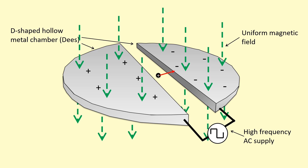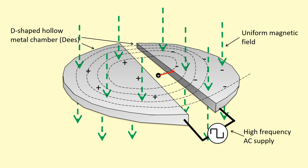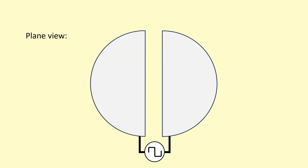Because the magnetic field is going to cause circular motion, it's actually going to spiral. Every time it goes through the gap it speeds up a bit, and this eventually comes out at near the speed of light. Let's take a more detailed view of what's going on. This diagram shows a plan view — basically from above — an overhead view, and there's going to be a magnetic field going into the page.